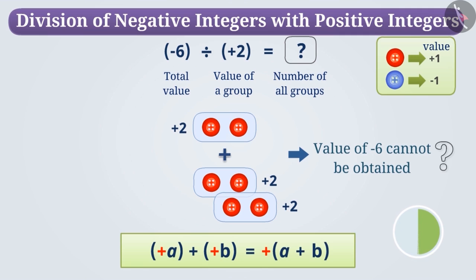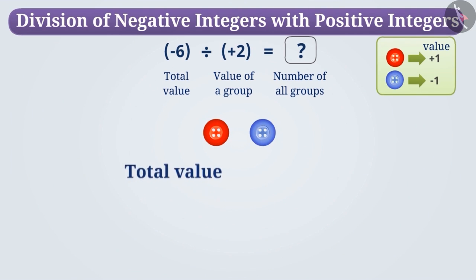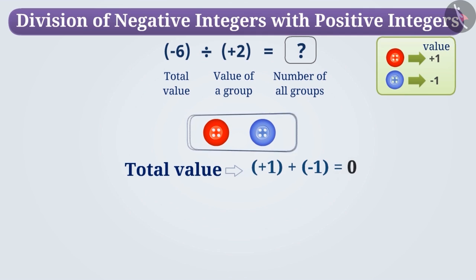Think well. Let me tell you. If we take a red button and a blue button, then the total value will be plus 1 plus minus 1 is equal to zero. Since the value of a pair of a red button and a blue button is zero, we call it a zero pair.